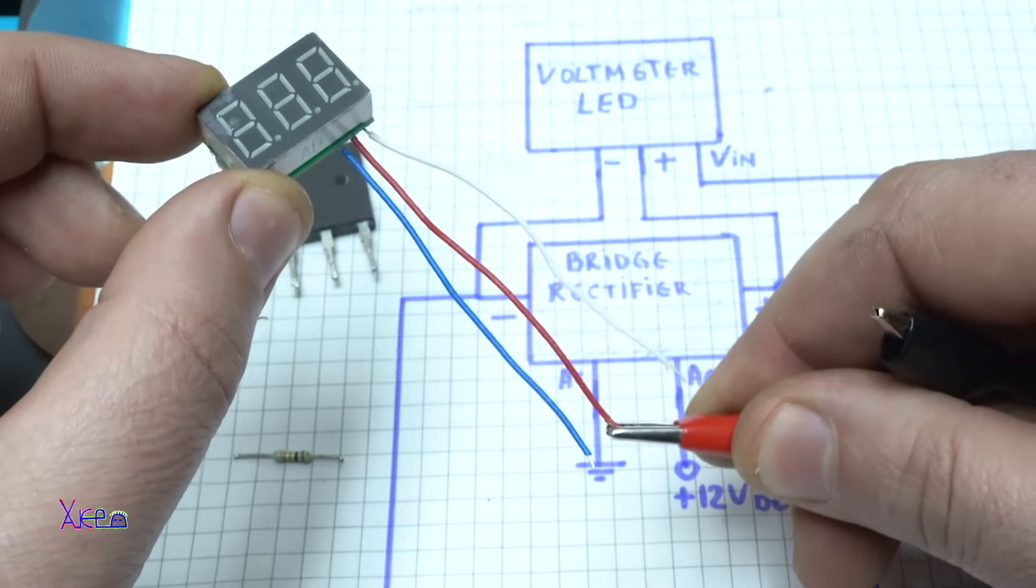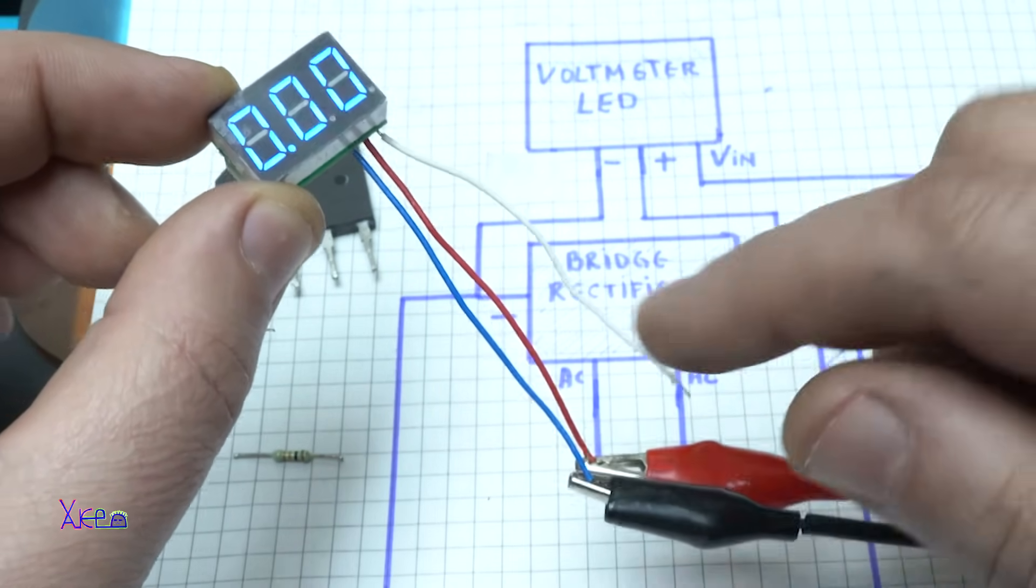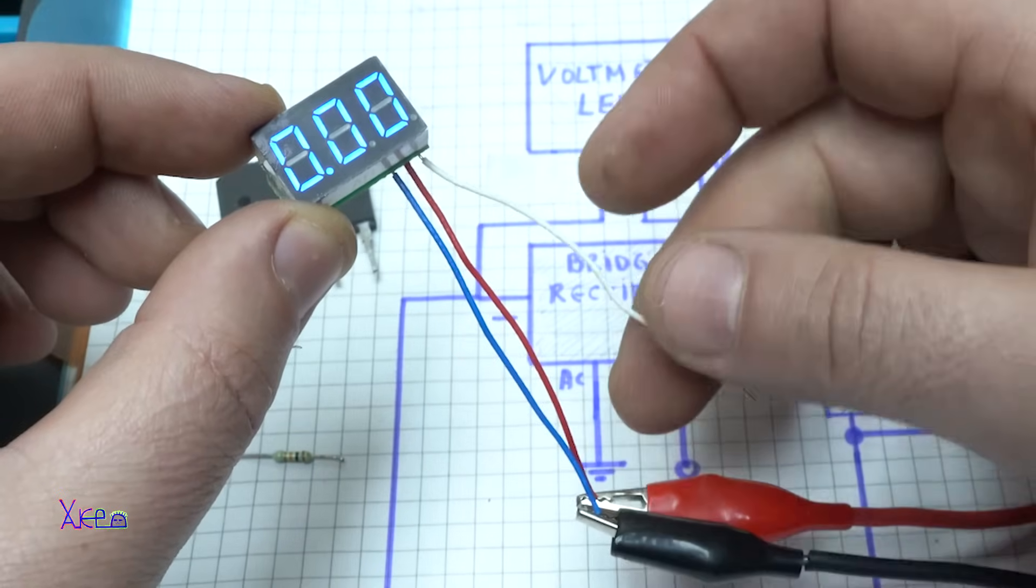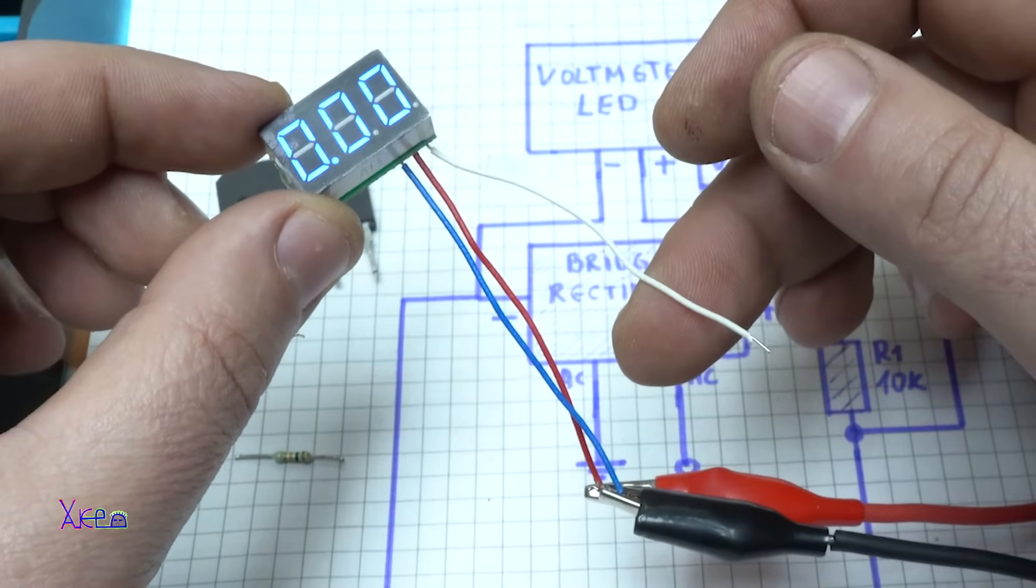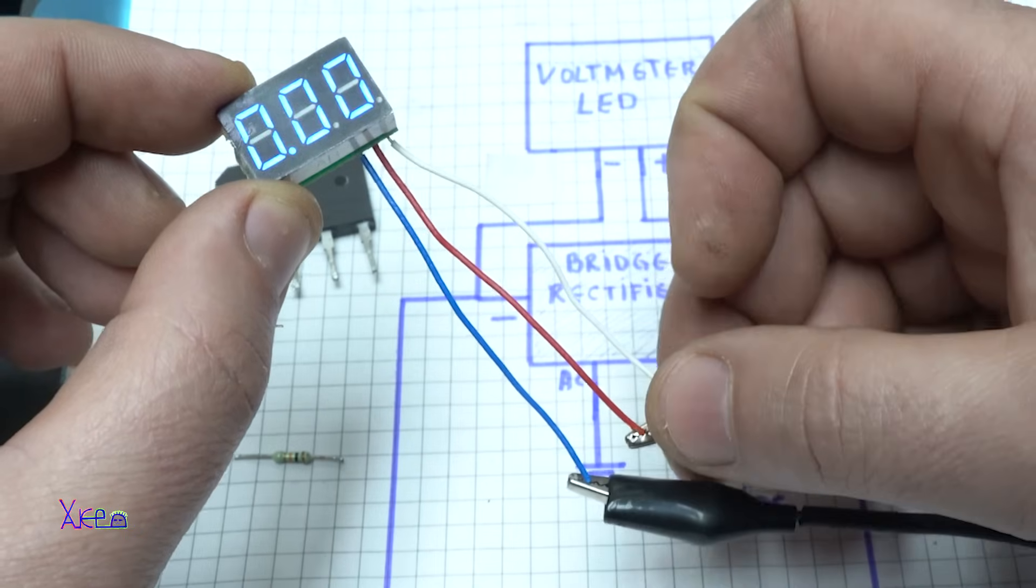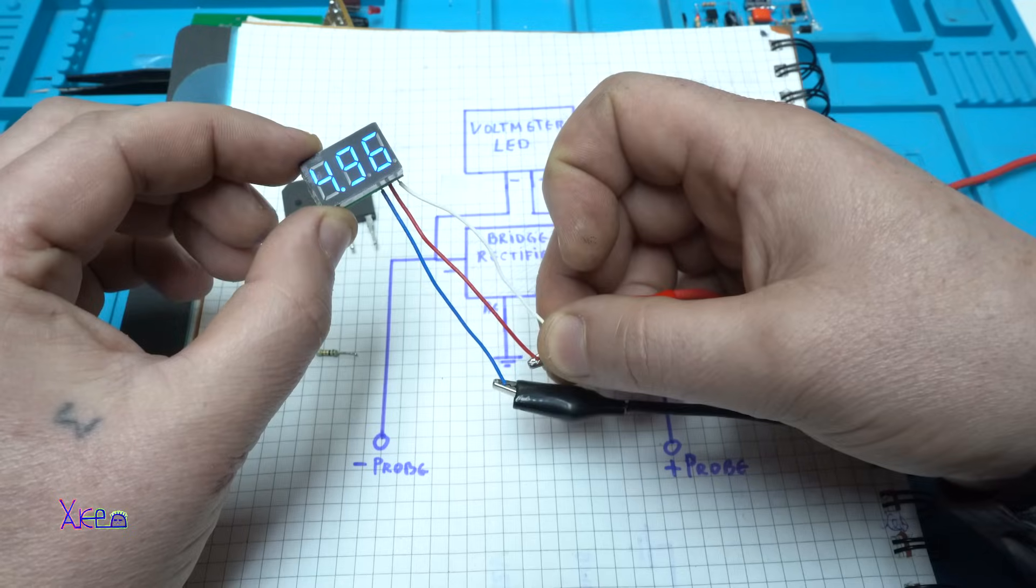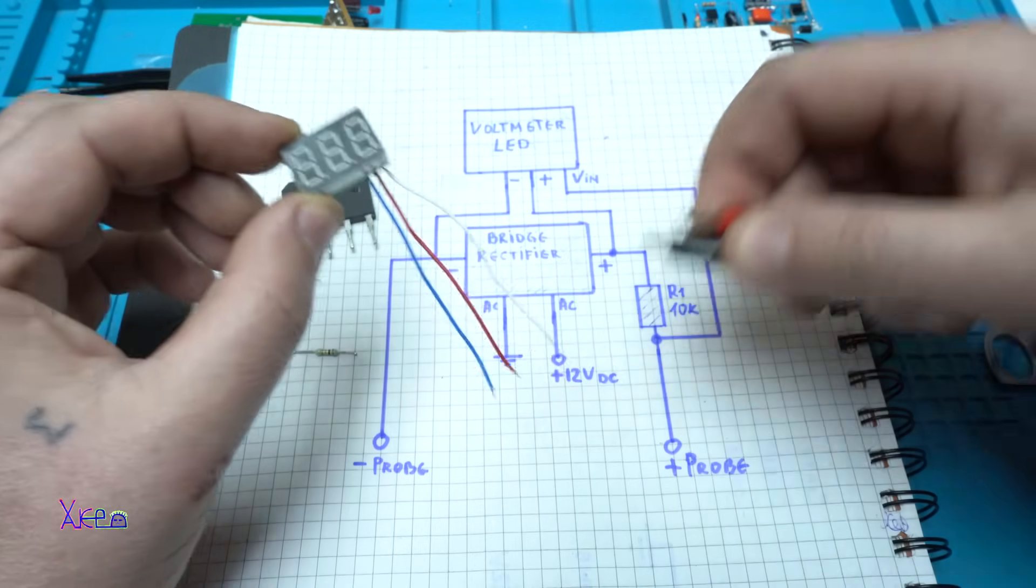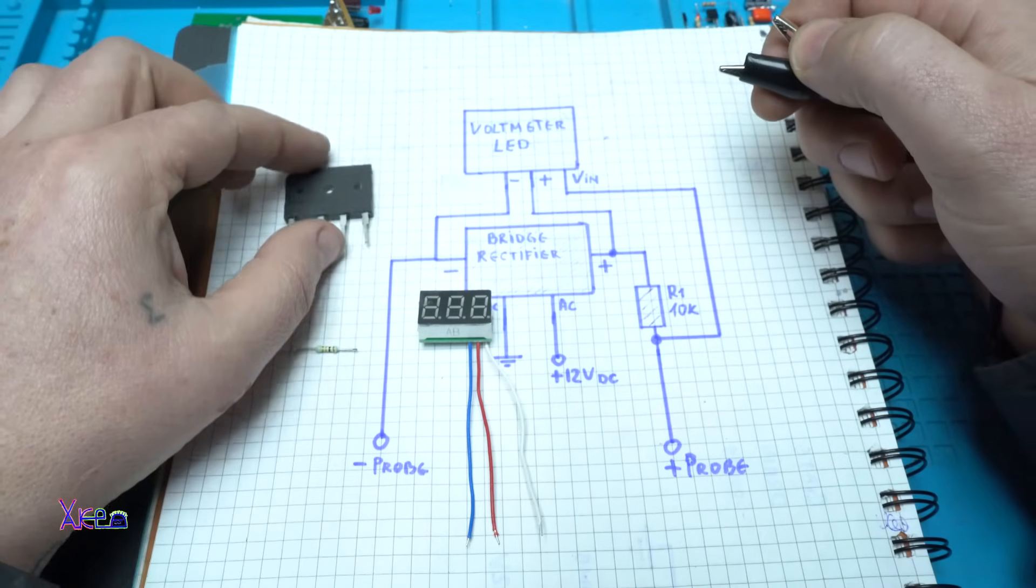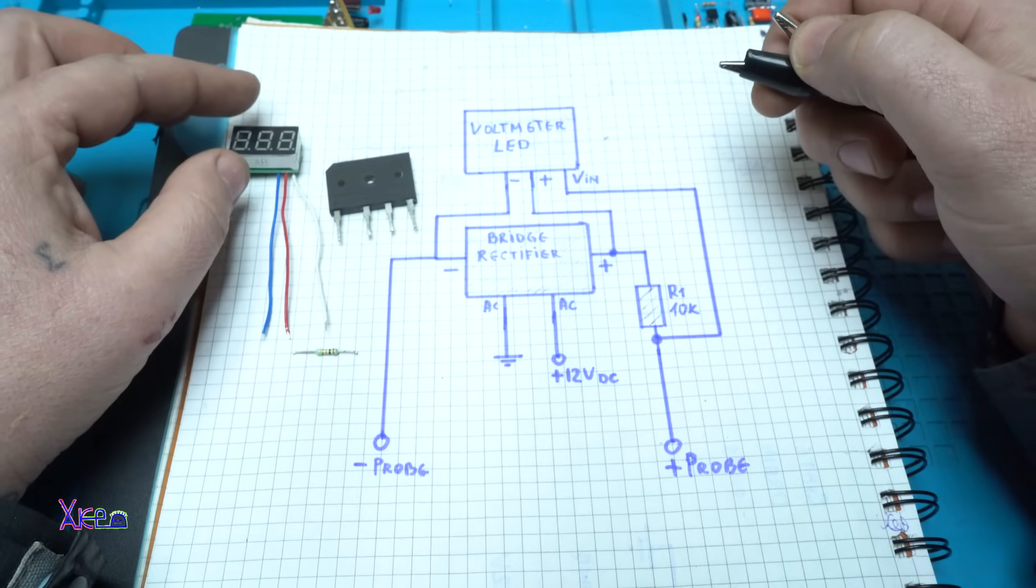It says zero zero zero. Why? Because this wire can't detect any voltage and can't measure. But if I connect to the positive, look, 4.96 volts. It's a digital LED voltmeter. And using this voltmeter in today's video project, I will show you how you can make a tester for electronic components.